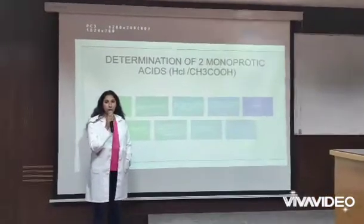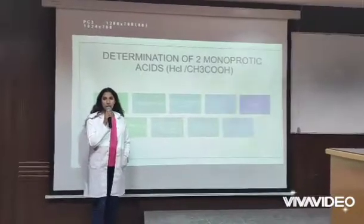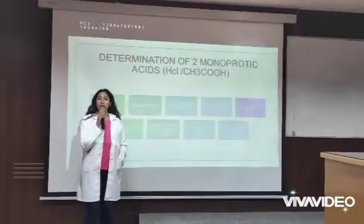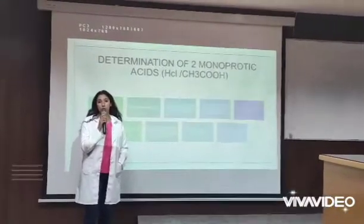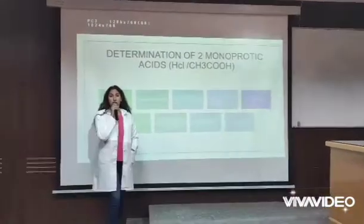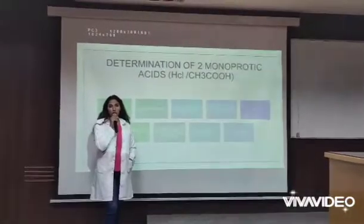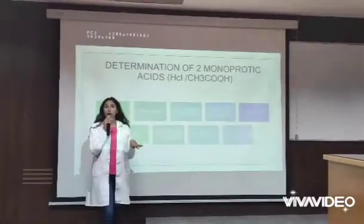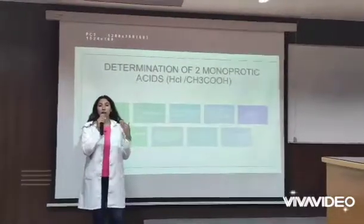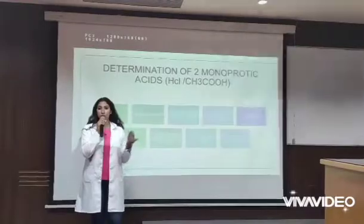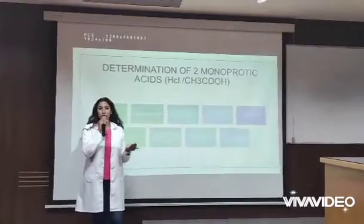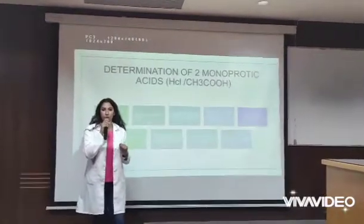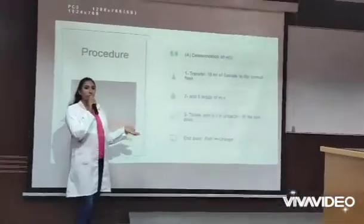First, we should know that HCl is a strong acid, while acetic acid is a weak one. Therefore, HCl will ionize first. And when it completely ionizes, acetic acid will start to ionize after it completely ionizes.